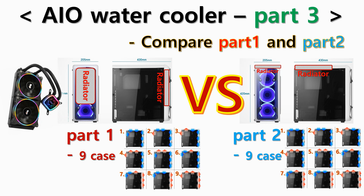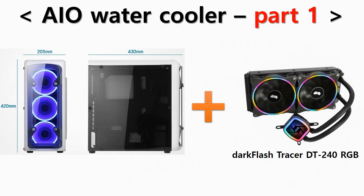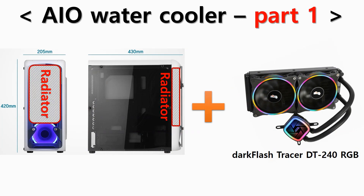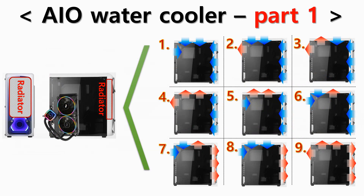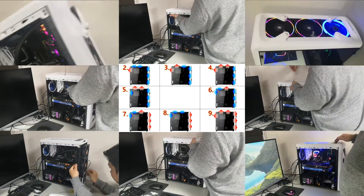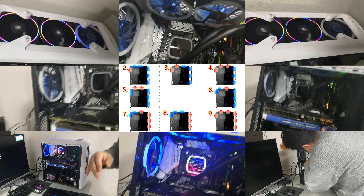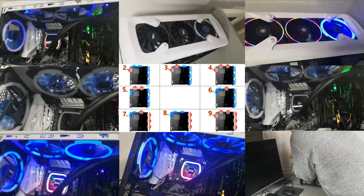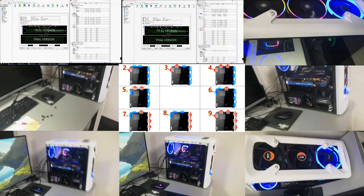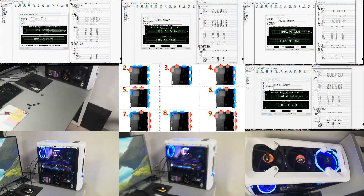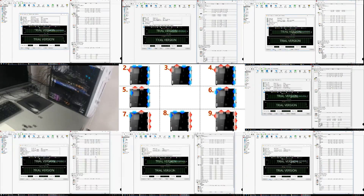AIO watercooler part 1 and part 2 were created to compare results. In part 1, the radiator was mounted on the front of the case and tested for 9 fan cooling settings to find the most effective result for PC cooling. Each condition was tested over half an hour, and it took more than 5 hours to test all nine conditions. Please refer to the link above for the detailed video.